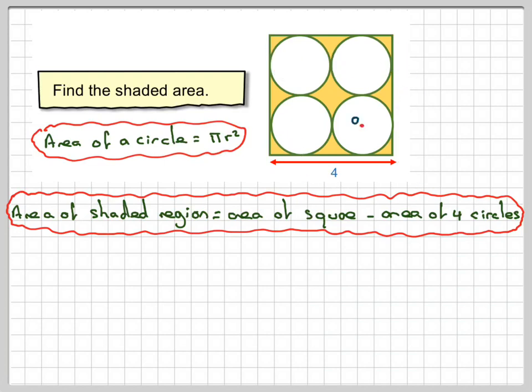And therefore this distance here is four. This is the center of one of the smaller circles, and this length here has to be one, because this will be one, this will be one, and this will be one as well, making up four.